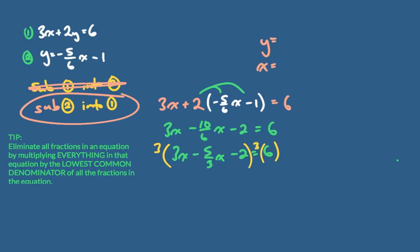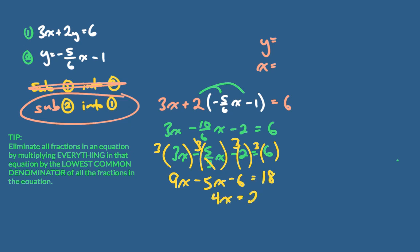Multiplying through by 3 — it might be easier to do it piece by piece: 3 times 3x is 9x; the 3's cancel on the fraction term, which is what gets rid of the fractions; 3 times 2 is 6; and 3 times 6 is 18. Rearranging correctly and finishing off, I find that x equals 6.